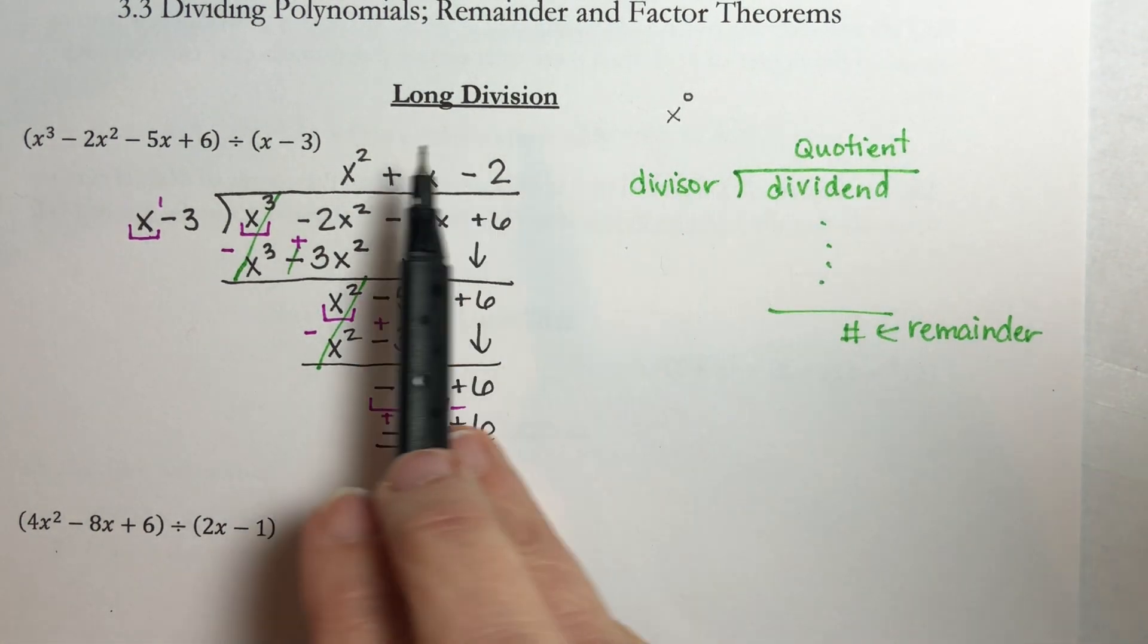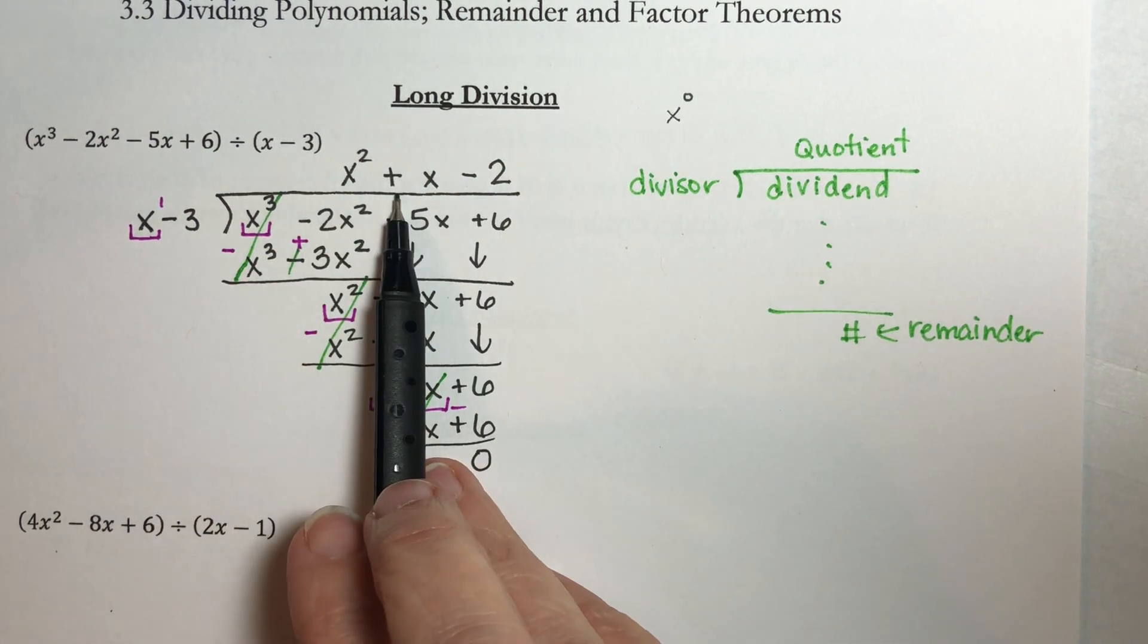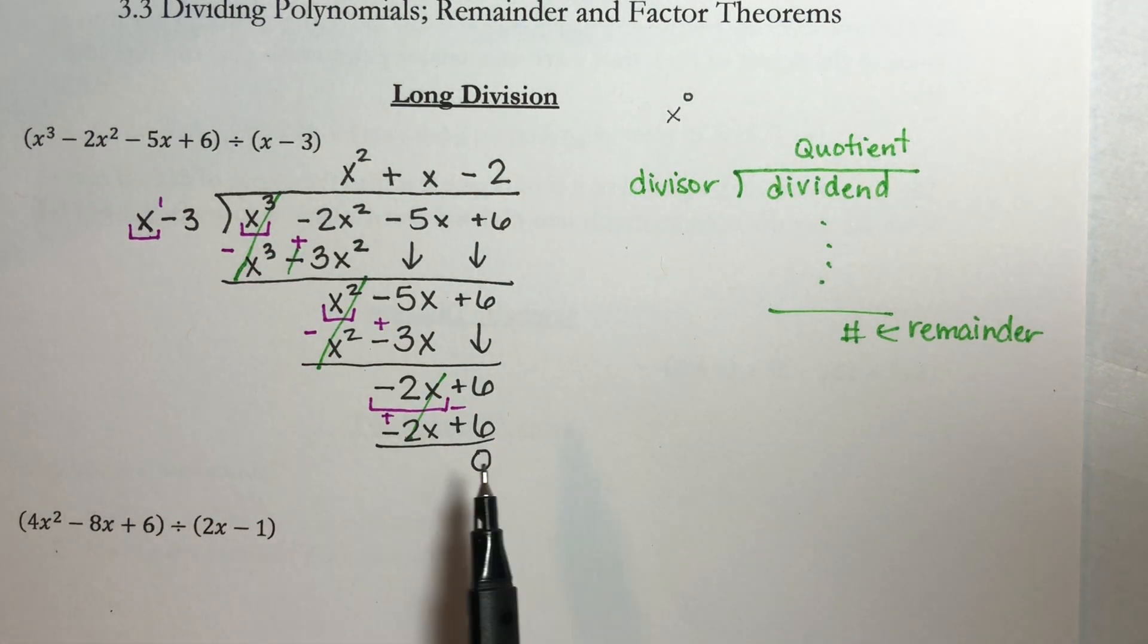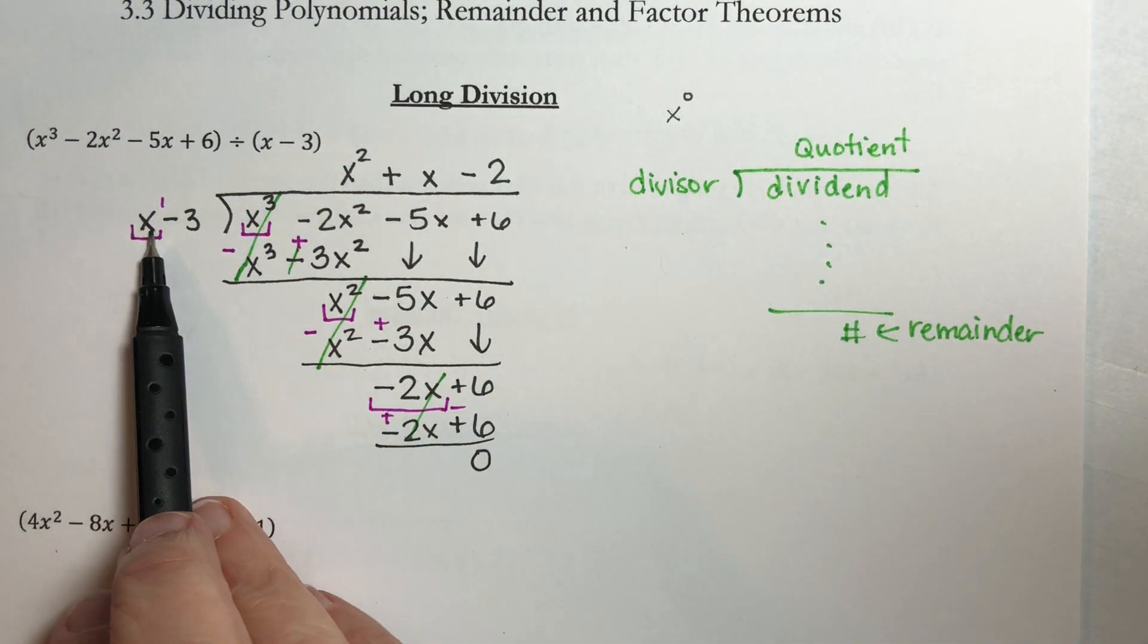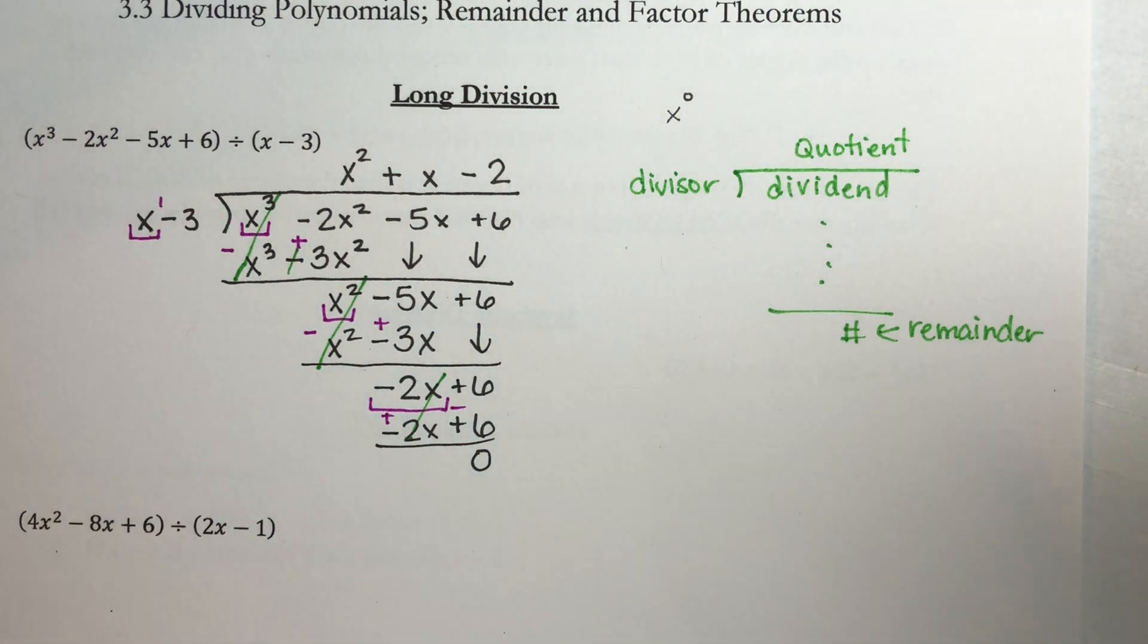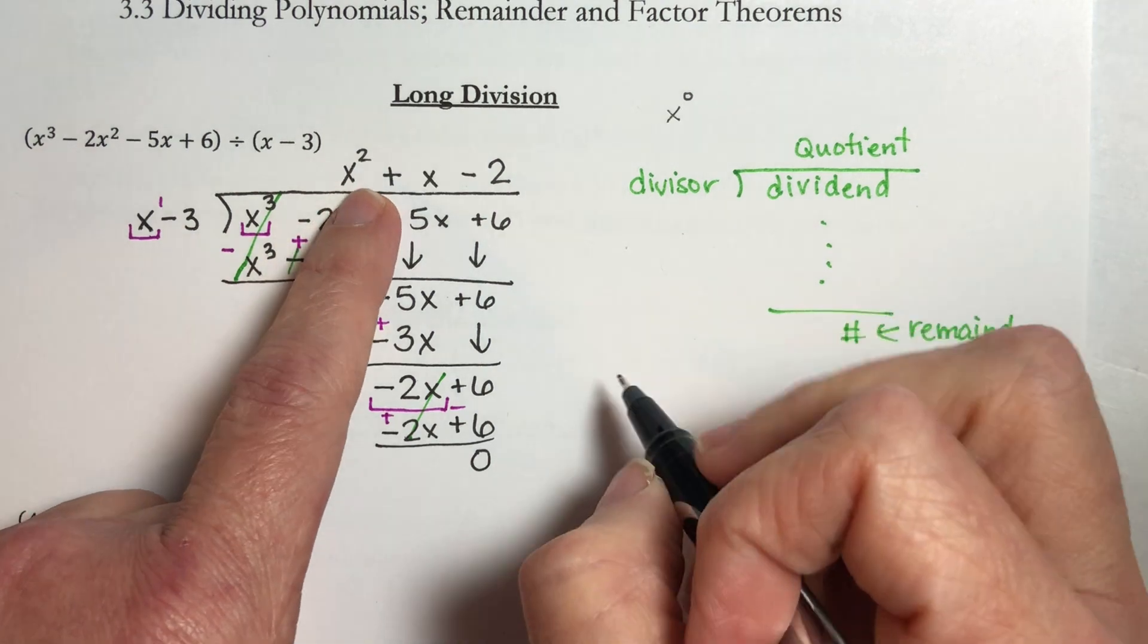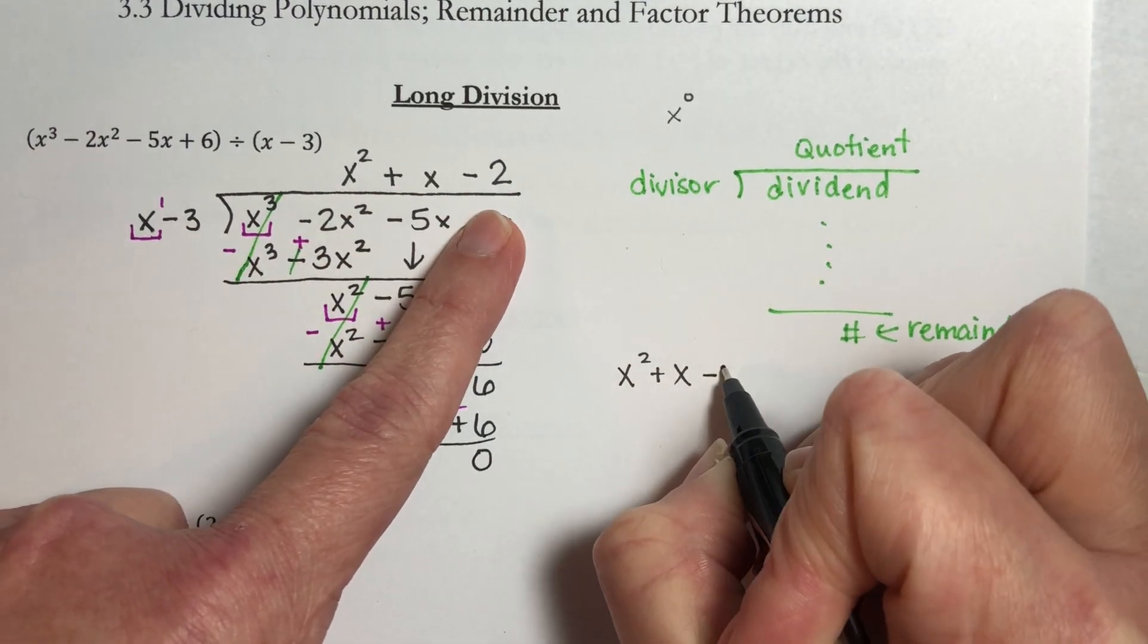So your quotient is right up here. A quotient is generally the answer to a division problem. And you have a remainder right here. In this case, our remainder is zero. That means we would say that this is a factor of this, because it divides in evenly. We're going to get to more definitions about this in a second. So how would you write your answer? Well, your answer is x squared plus x minus two.